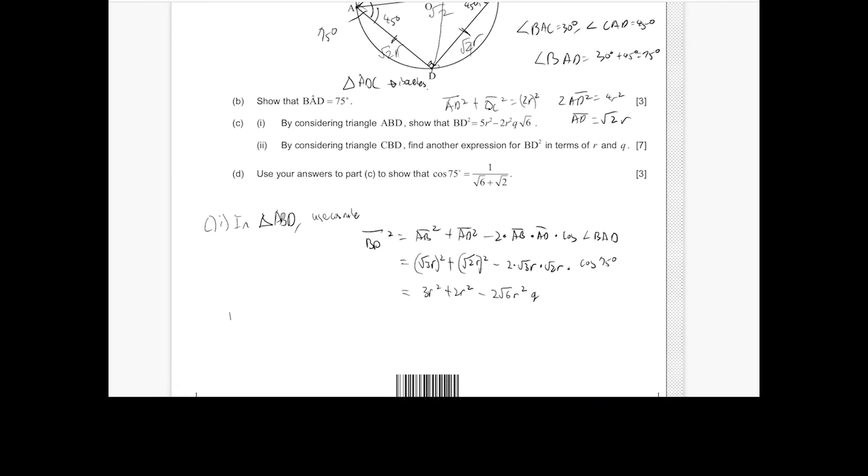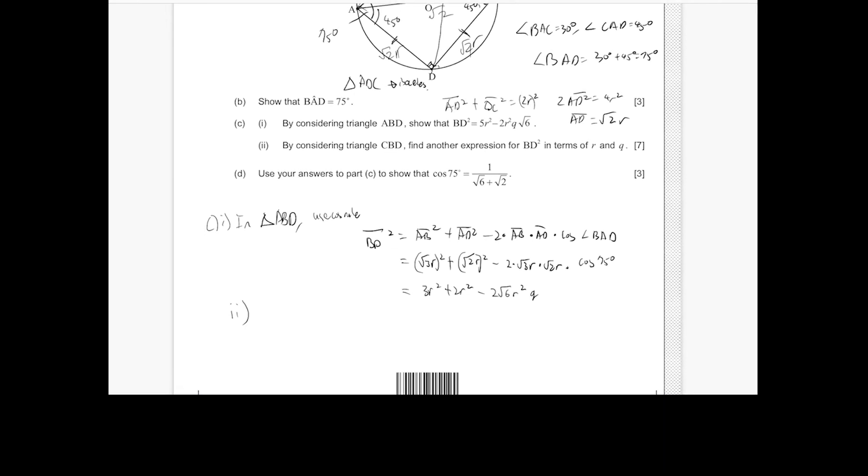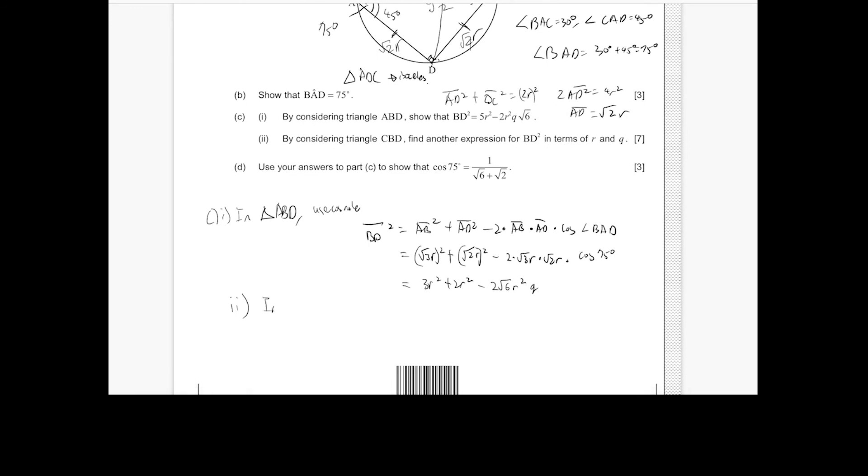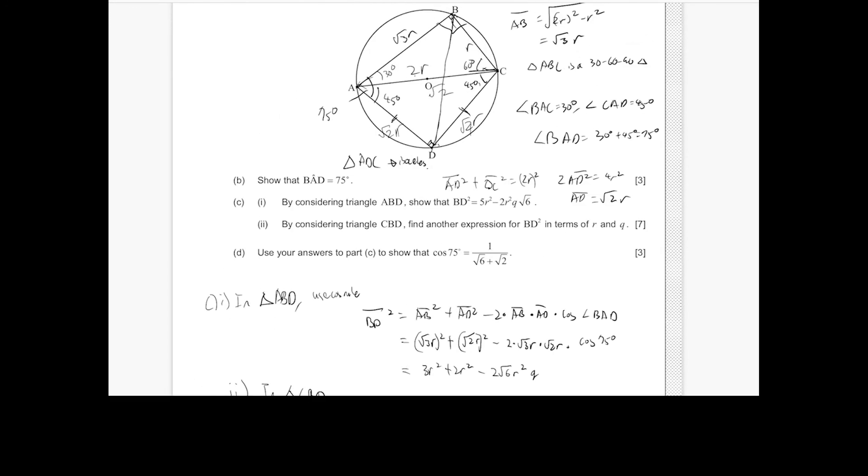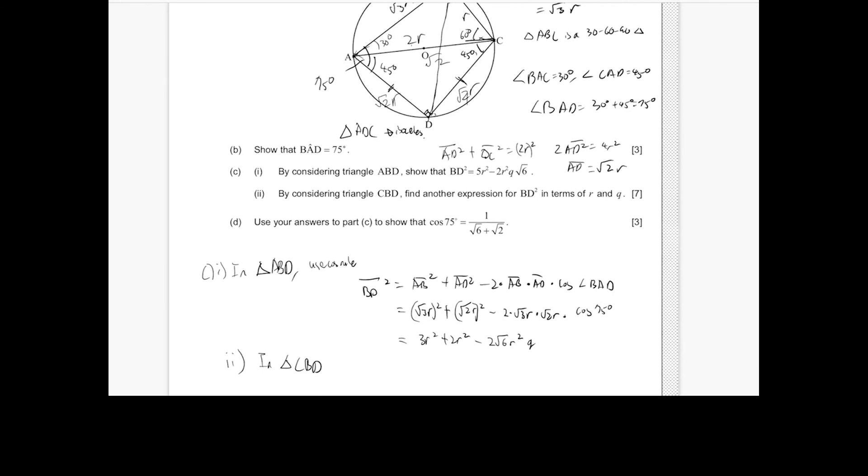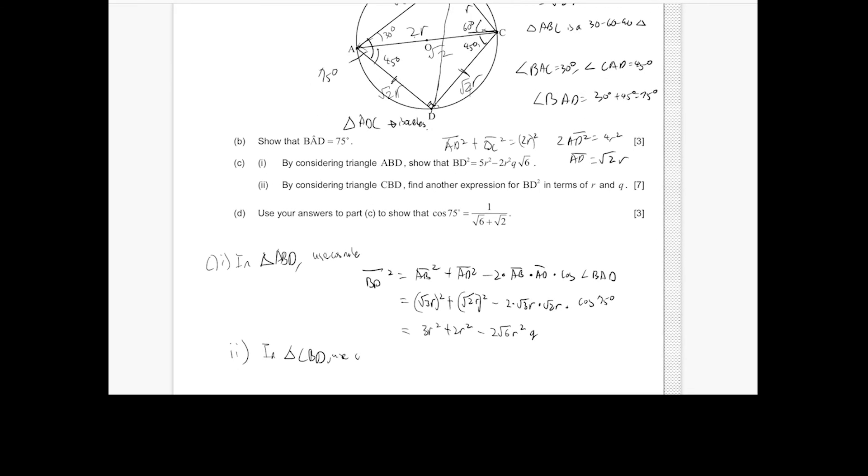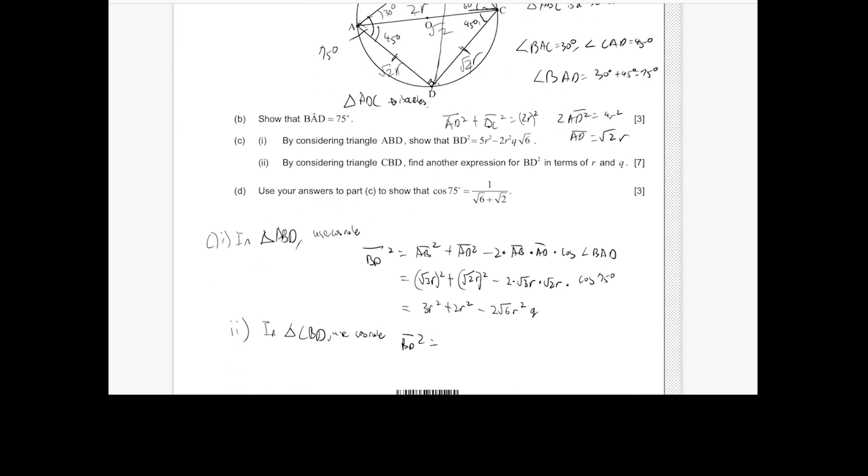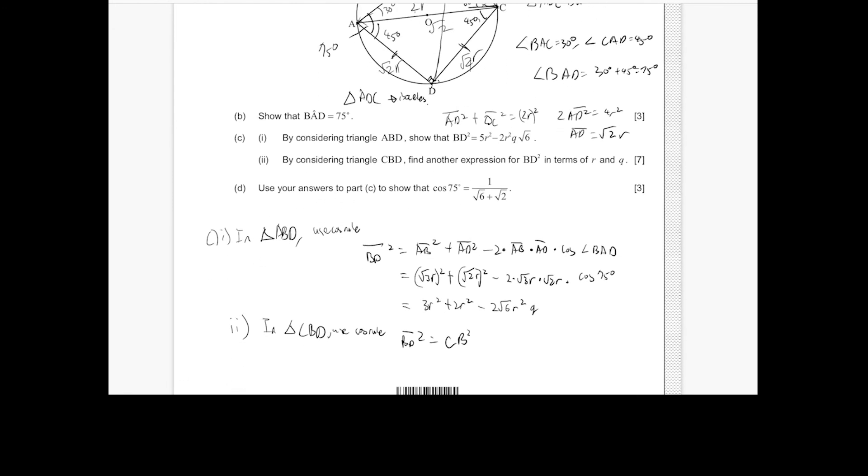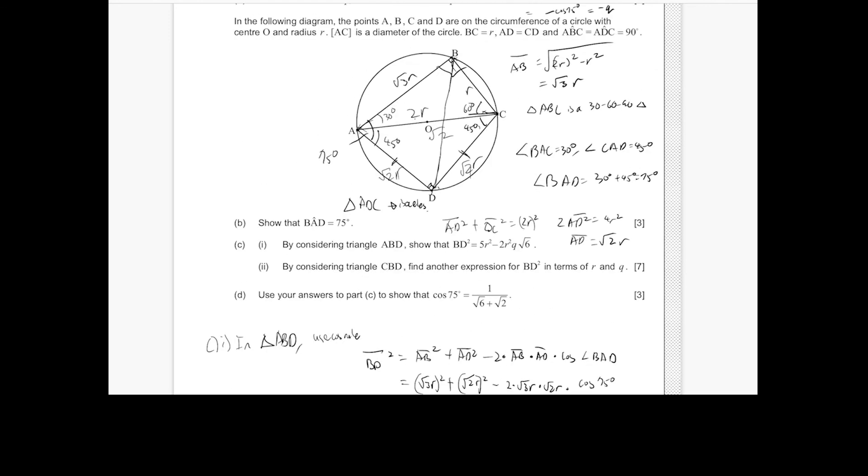Next, moving to C2, we're now considering triangle CBD. So in triangle CBD, we can use a cosine rule again. So cosine rule to show BD squared equals... This time it's CB squared plus CD squared minus 2 times CB times CD times cosine the angle opposing BD. So that's BCD.